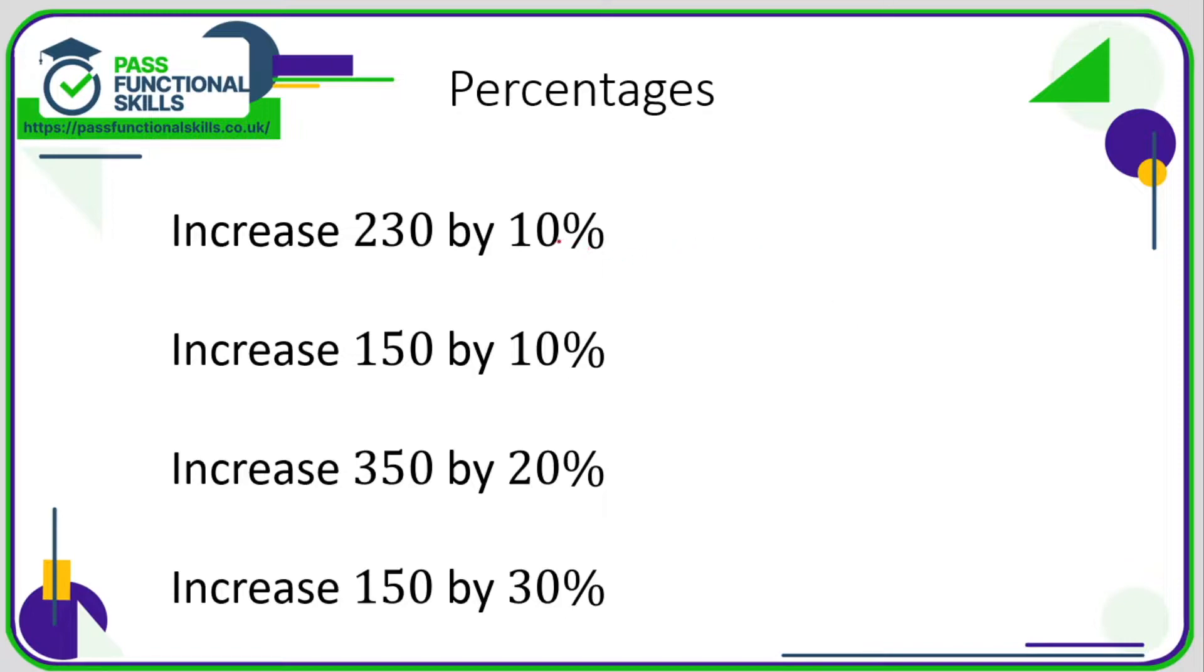If we're increasing by 10%, let's work out 10% first of all. 10% of 230 is 23. So all we're doing is adding 23 to the amount of 230, and that comes to 253.